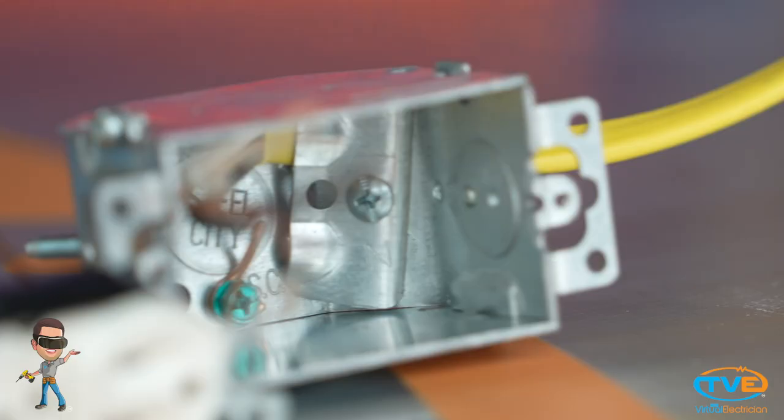Whenever you have equipment grounding conductors in a metal box, you need to attach them to the box using a green grounding screw or grounding clip.